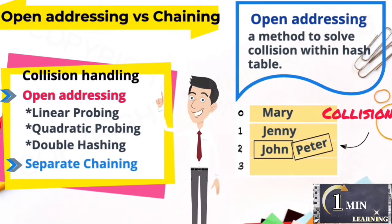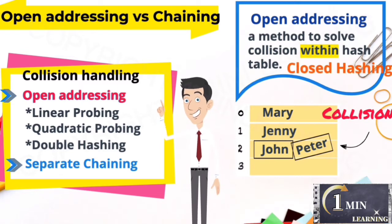Open addressing is a method to solve collision within hash table. It's also called closed hashing. Linear probing, quadratic probing, and double hashing are under this category.